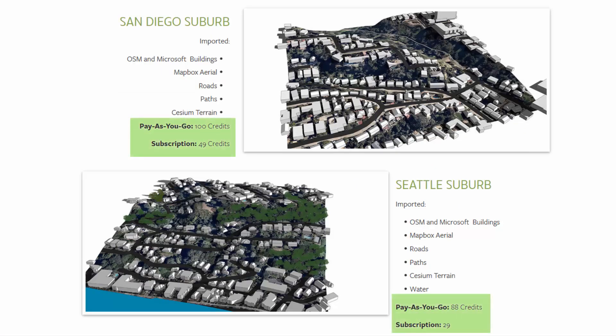You can access the buildings and aerials the same way. The biggest difference between the two is the subscription model — some of the data is free and all other data is discounted versus the pay-as-you-go model, where you're using credits for all the data and there are more data costs. Check out the video about the pay-as-you-go subscription credit system.